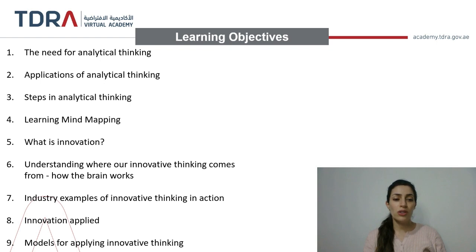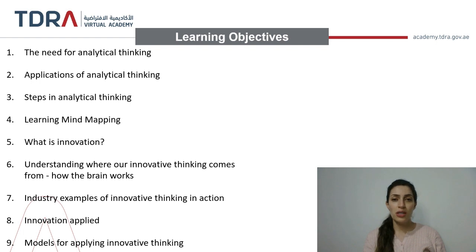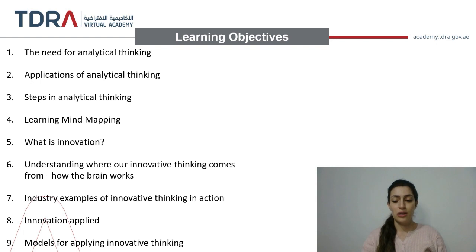Number five, what is innovation; number six, understanding where our innovative thinking comes from and how the brain works; number seven, industry examples of innovative thinking in action; number eight, innovation applied; and number nine, models for applying innovative thinking.